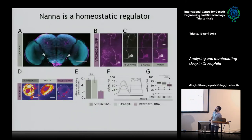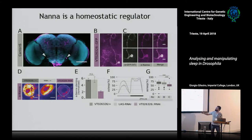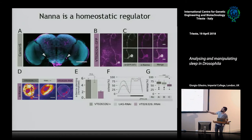Nana, conversely, has a very different expression pattern. It's mainly expressed in a handful of neurons in one area of the brain — the cell bodies are here, and they project axons across each other, doing a small circle around the pedunculus of the mushroom body. We screened through the VT collection in Vienna and obtained a GAL4 line that recapitulates this expression. When we drive RNAi using this GAL4, we again find a sleep phenotype. So the same gene, with two splicing isoforms, has different expression patterns — and knocking down nana in these neurons also produces a sleep phenotype.